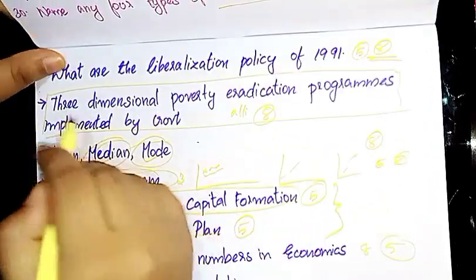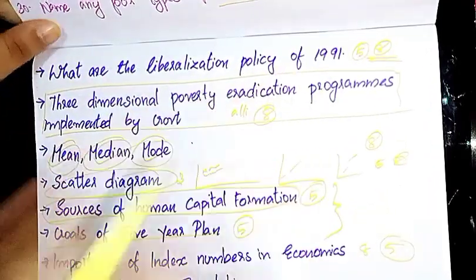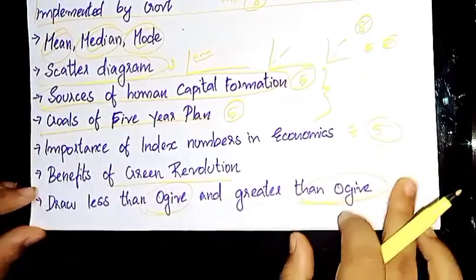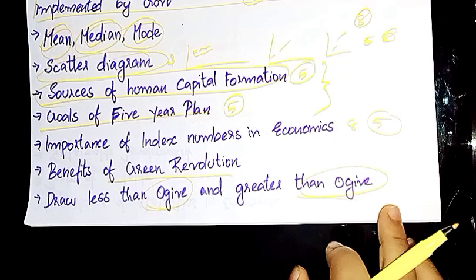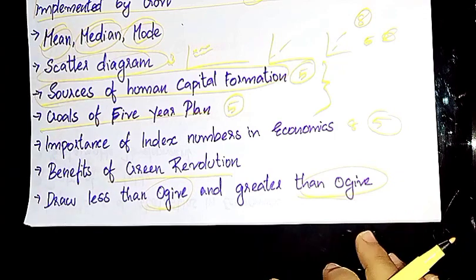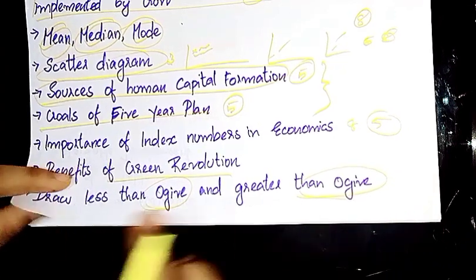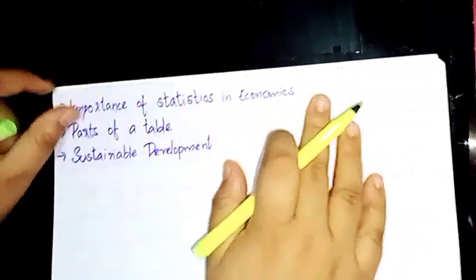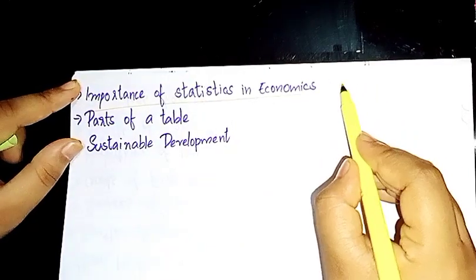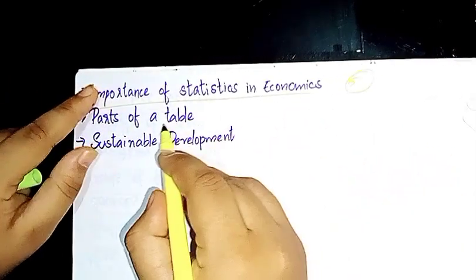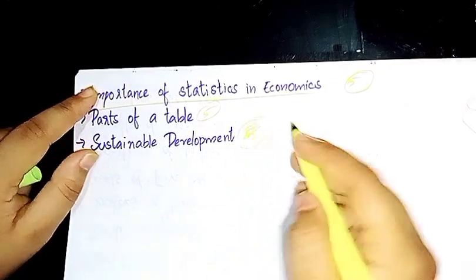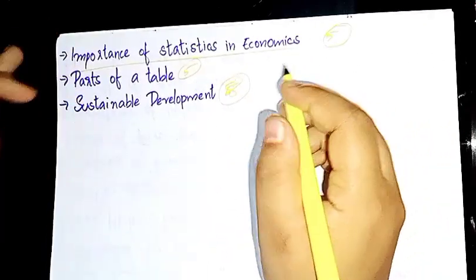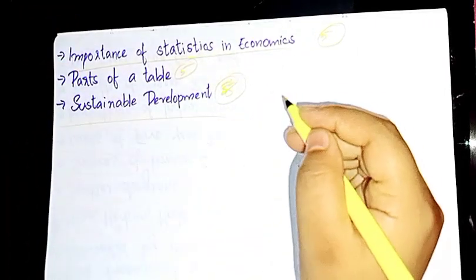What is the question about poverty eradication? In Mean, Median — less than or greater than — we want more questions. We want more questions about poverty. Next one is the Importance of Statistics in Economics. We will show you the market. Then: Parts of a Table — the results are about 5 marks. You should demonstrate the review and look for the details.